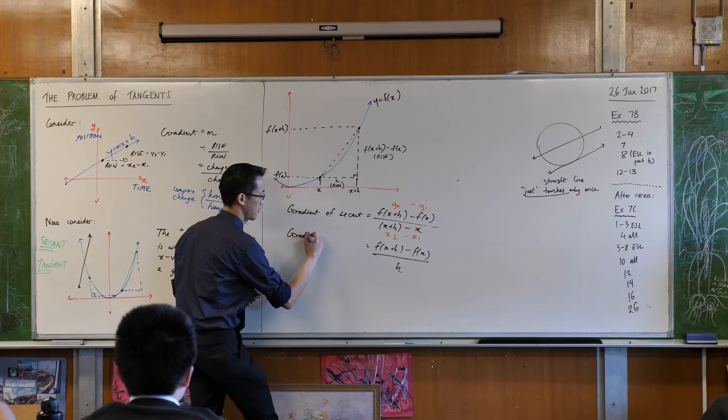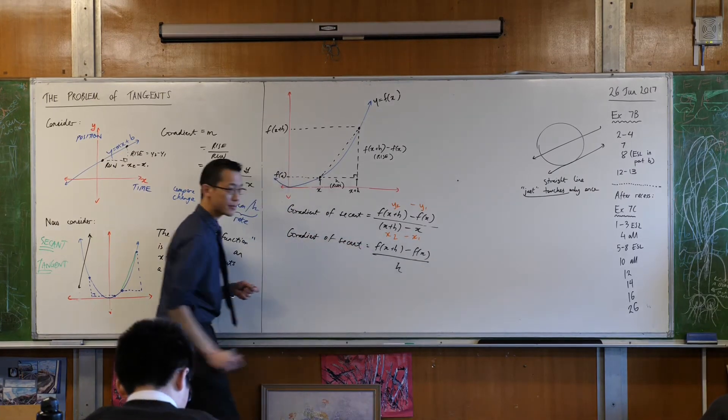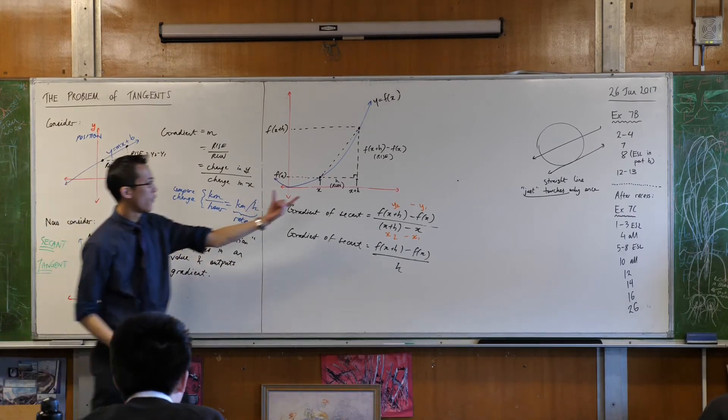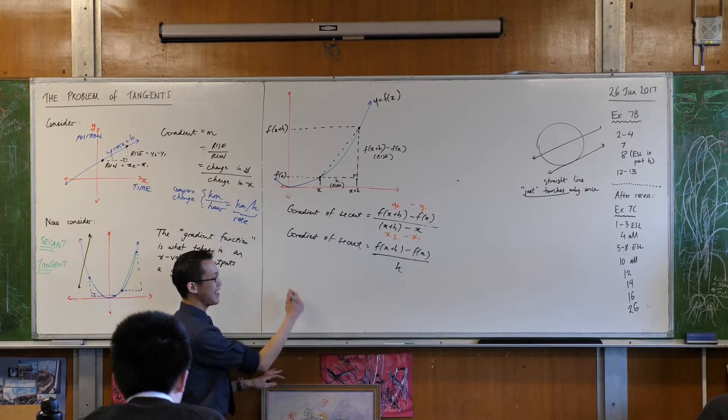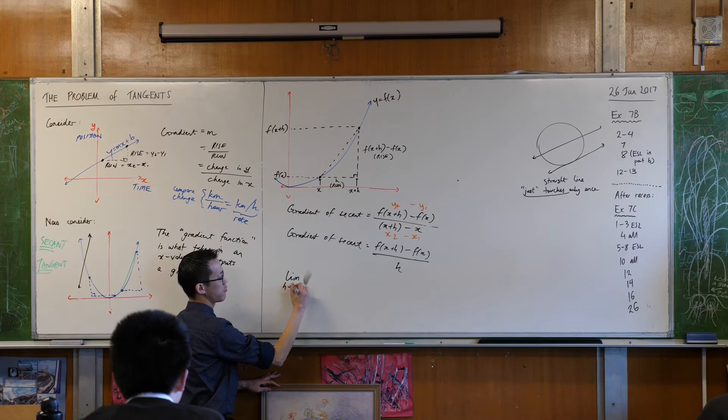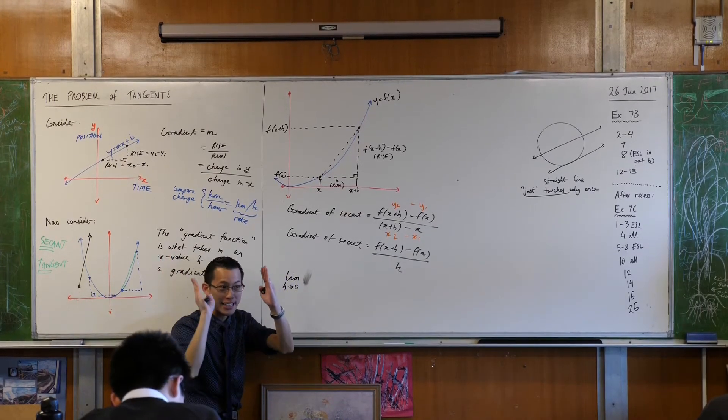So the gradient of the secant. If you say what happens to this gradient when this distance here gets really, really tiny, the way we say that in limit notation is the limit as h approaches zero, right? I'm looking at the run and I'm trying to make it tiny. So this is the gradient of the secant.